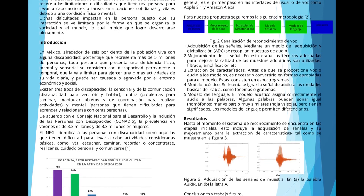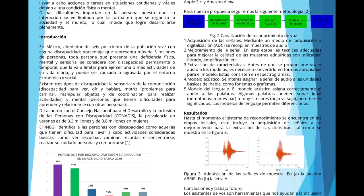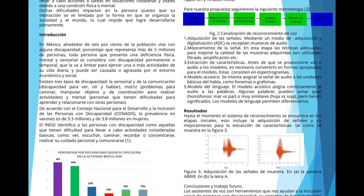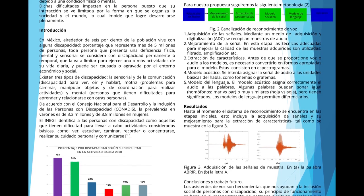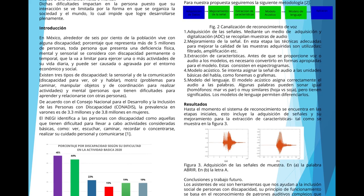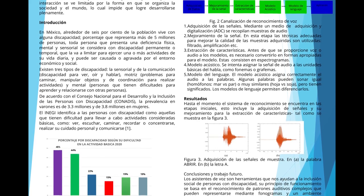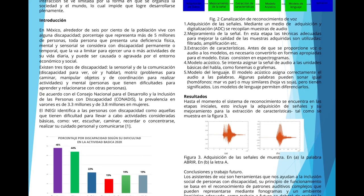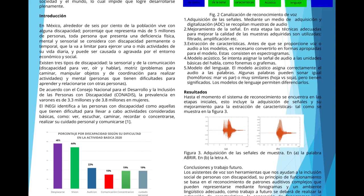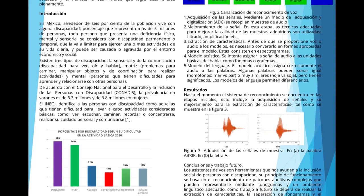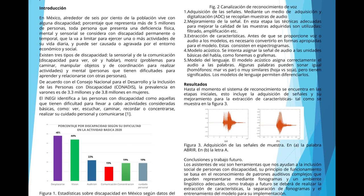En la etapa tres es la extracción de características. Antes de proporcionar voz o audio al modelo, es necesario convertirlo en formas apropiadas; estas consistirán en espectrogramas. En la cuarta etapa es el modelo acústico, en donde se intenta asignar la señal de audio a las unidades básicas del habla, como fonemas o grafemas. En la quinta y última etapa es el modelo del lenguaje, donde se asigna correctamente el audio a las palabras, en el cual el modelo permitirá diferenciarlos.